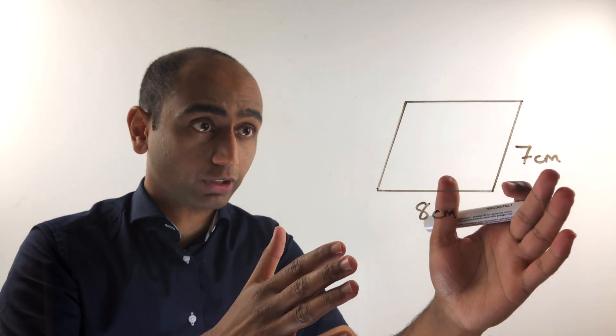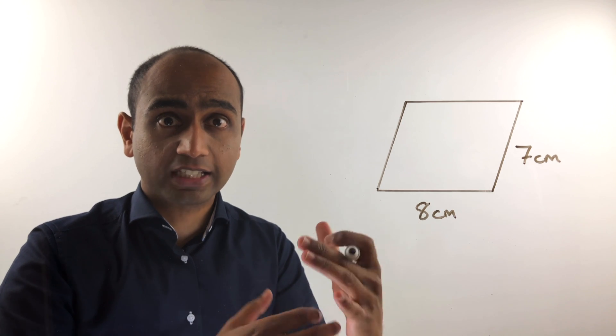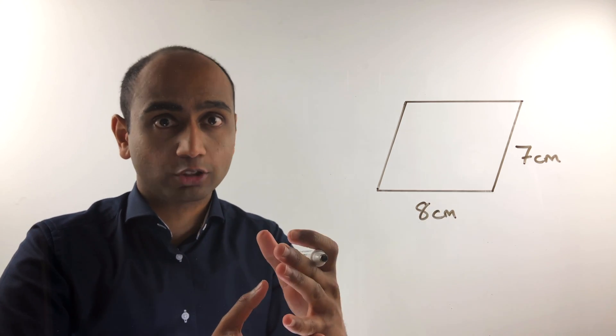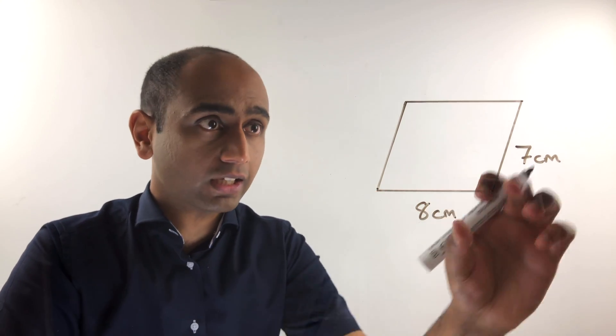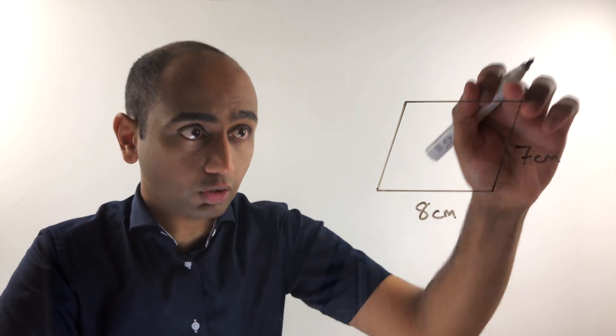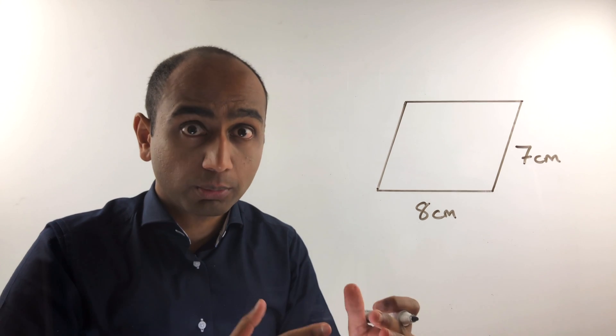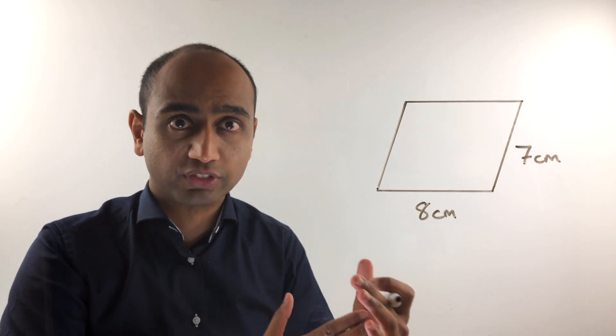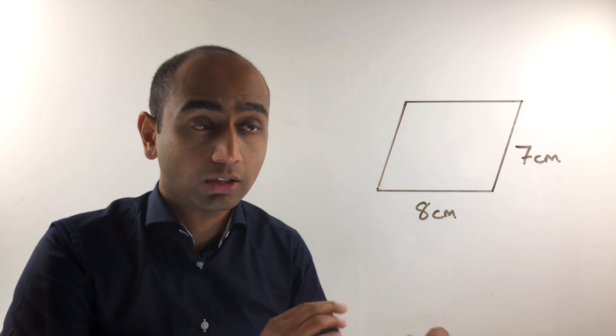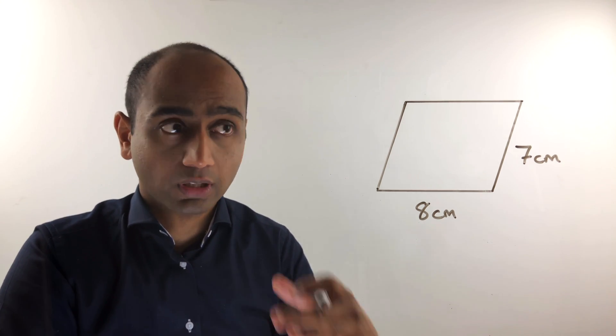Now here is a parallelogram. At first glance it looks very similar to the rectangle we just had. It's got a side that's 8 centimetres long this way and a side that's 7 centimetres long this way. So you might be tempted to think the area is 8 times 7, which is 56 centimetres squared, but actually that's not true.